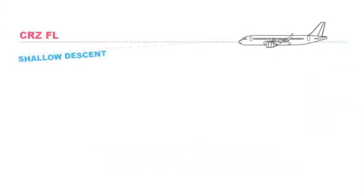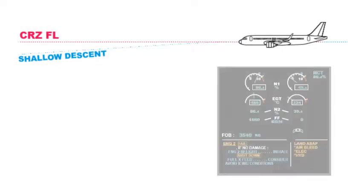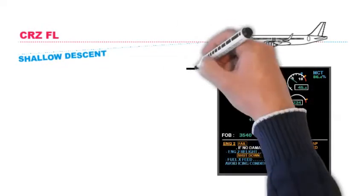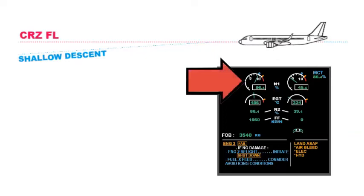Explanation: The auto-thrust is disconnected to avoid automatic engine thrust reduction when selecting speed according to strategy pulling for open descent.